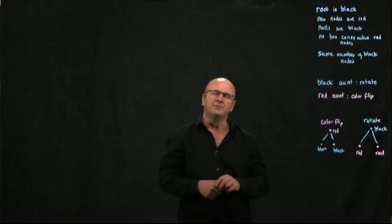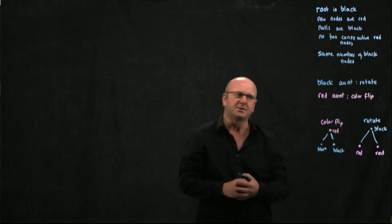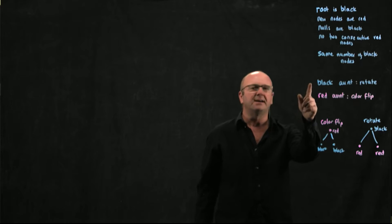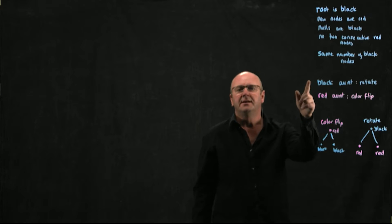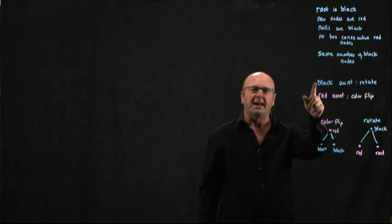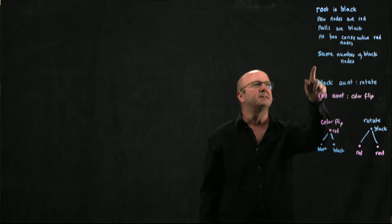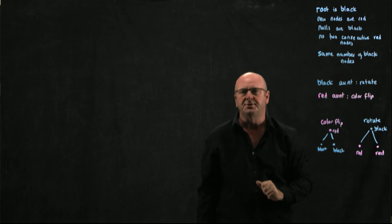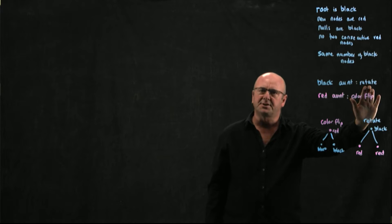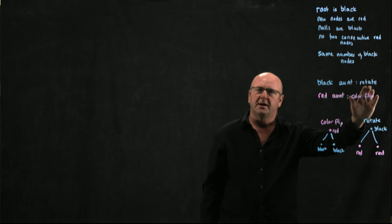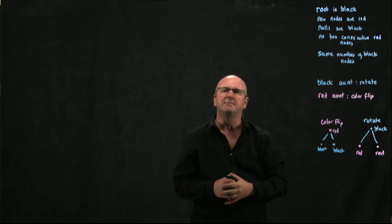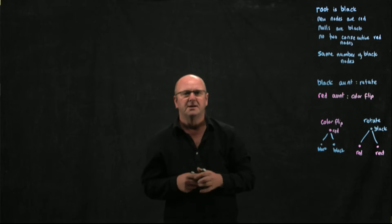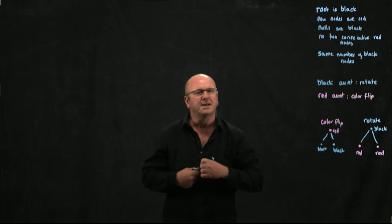There are two rules for how we manipulate the tree. If we have a node that's causing a violation and its aunt is black — meaning either it's null or the black boolean is true — we do a rotation. Our rotations are the same rotations we've seen in AVL trees.